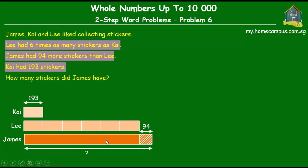So how do we find out how many stickers James had? Well, if we can find out how many stickers this orange block is equal to, then we add 94 to that and that will give us the total number of stickers that James had. From the model diagram, it's quite clear that the number of stickers given by this orange unit is the same as the number of stickers that Lee had. So the first step is to find out how many stickers Lee had.